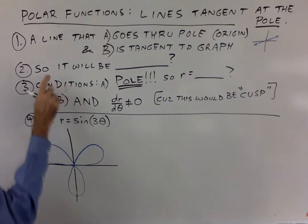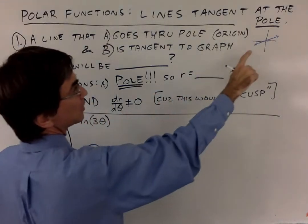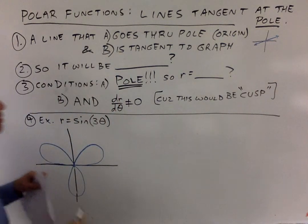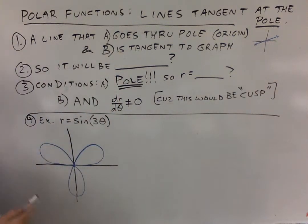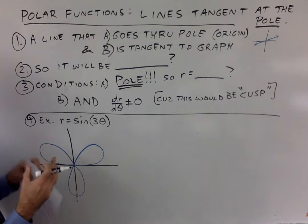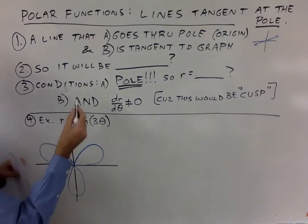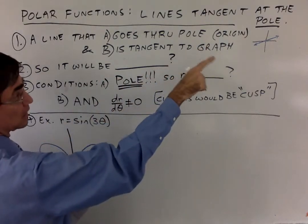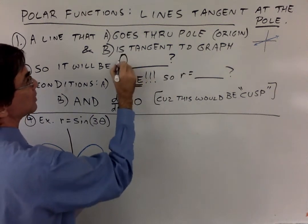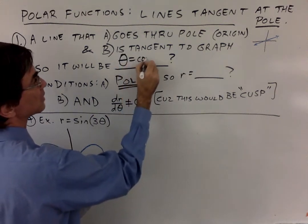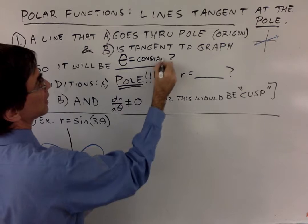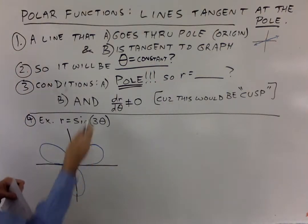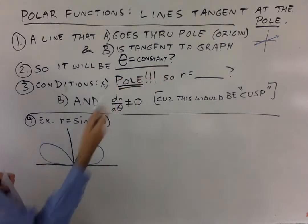So what form would that have in polar coordinates? If you have a line that is tangent at the pole, what general form does it have to have? The general form of a straight line going through the pole is always theta equals some constant — like theta equals zero or theta equals pi over six. No r involved for that kind of line.